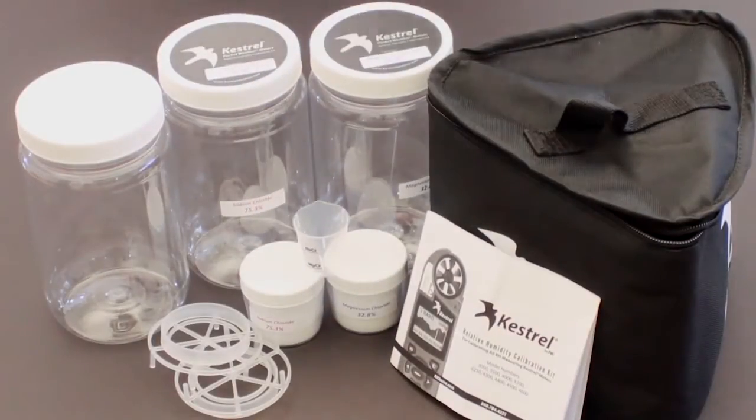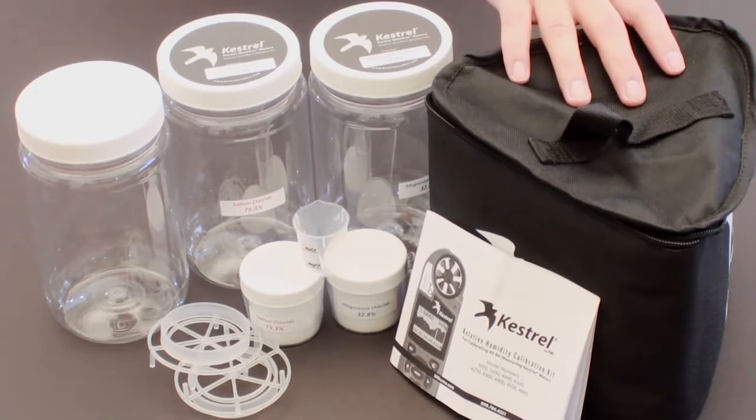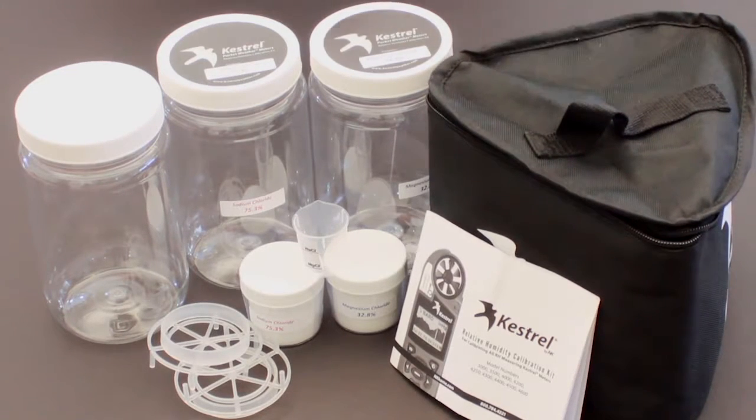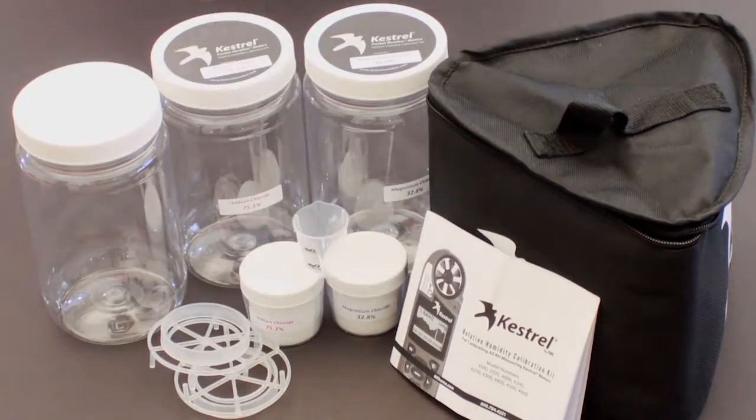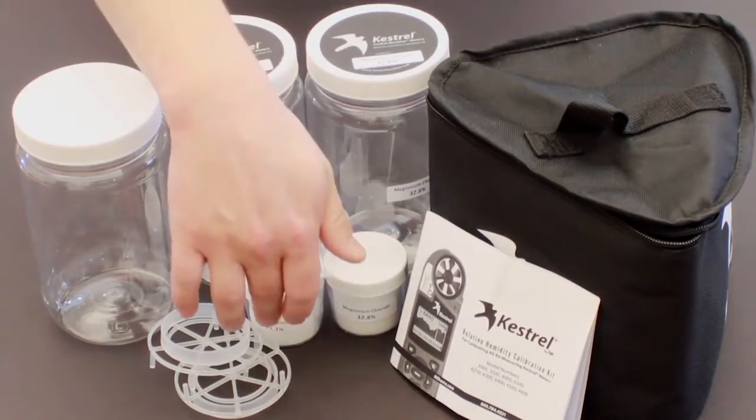The RH calibration kit comes with an insulated bag. The contents of this bag are a magnesium chloride jar and salts, and a sodium chloride jar and salts.